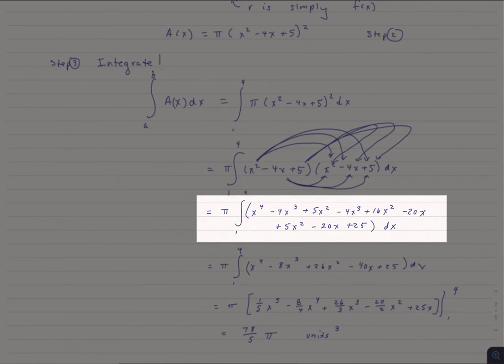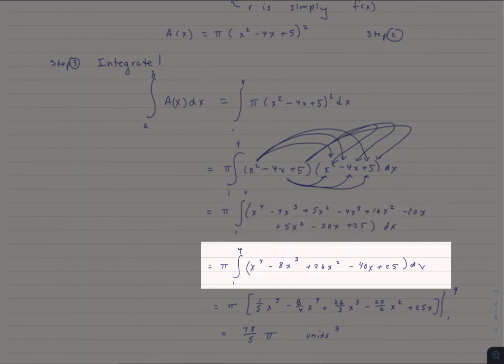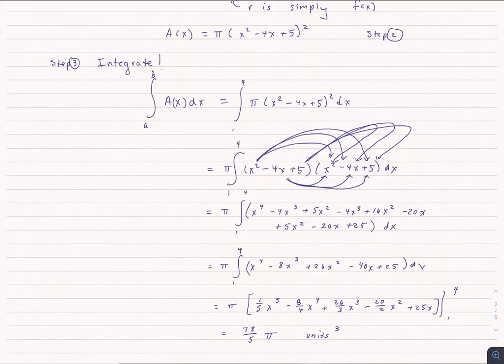Then we simply combine like terms, and then from here it's pretty straightforward. And the volume of this shape is 78 over 5 pi, and that will be units cubed, since this is a volume.